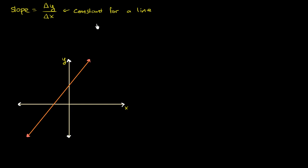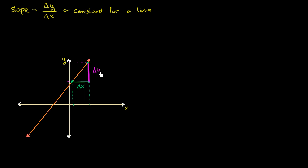What I want to do in this video is to actually prove that using similar triangles from geometry. So let's think about two sets of two points. Let's say that's a point there, and let me end up at that point. What is our change in x between these two points? This point's x value is right over here, and this point's x value is right over here. So our change in x is going to be that right over there. And what's our change in y? This point's y value is right over here, this point's y value is right over here — so this height is our change in y.